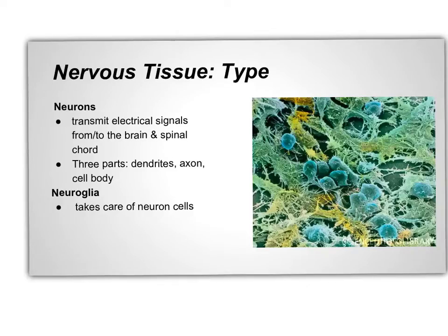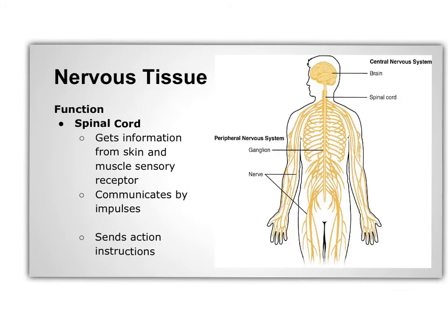The nervous system consists of two kinds of main cells: neurons and neuroglia. Neurons create nerve impulses that transport information around the body and transmit electrical signals from and to the brain and spinal cord. Neuroglia have multiple uses but don't transmit information; instead, they take care of the neuron cells. The spinal cord receives information from the skin and muscle sensory receptors, then sends out movement instructions.